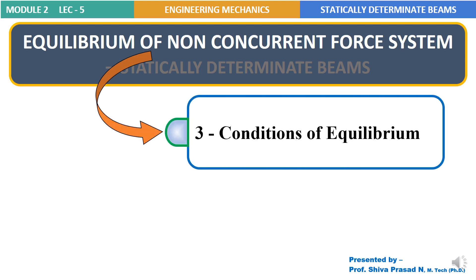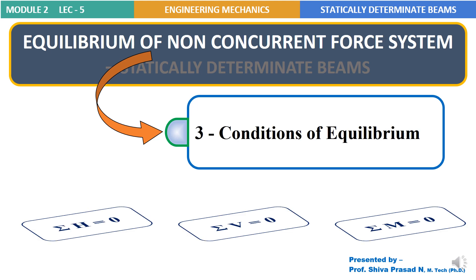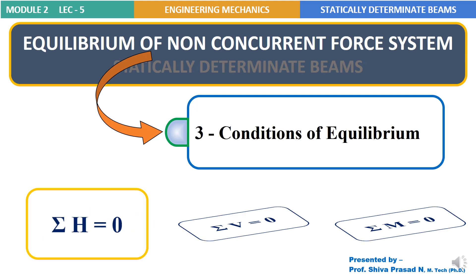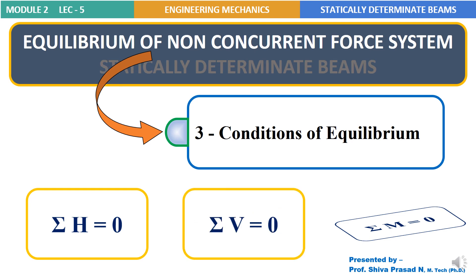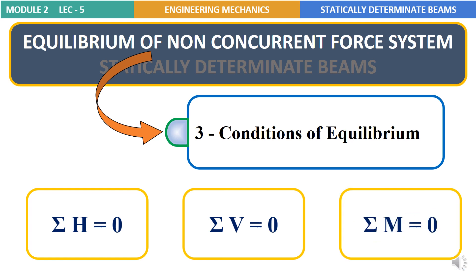We have three conditions of equilibrium. First, algebraic sum of all horizontal components equal to 0. Second, algebraic sum of all vertical components equal to 0. Third, algebraic sum of all moments equal to 0. Using these three conditions of equilibrium, we try to solve or find the unknown reactions of statically determinate beams.